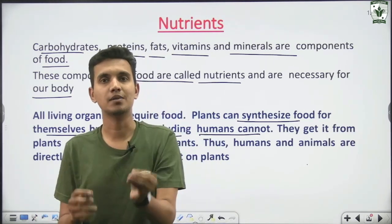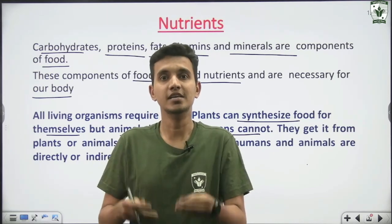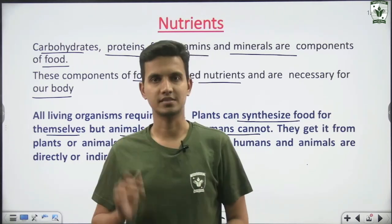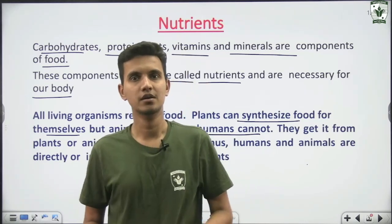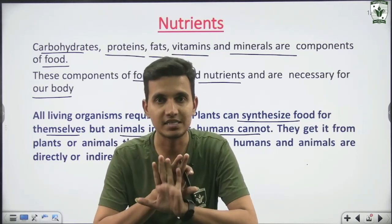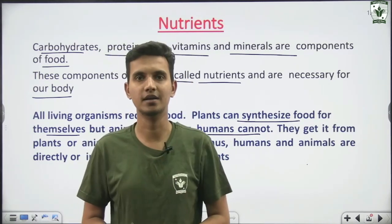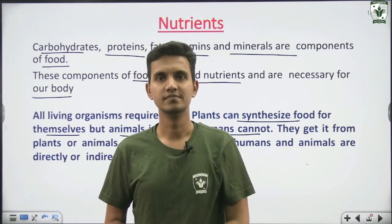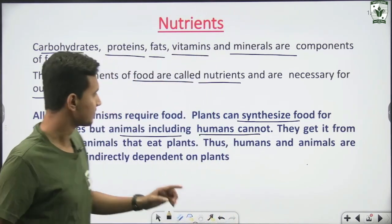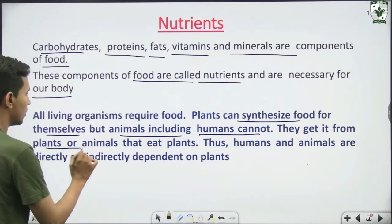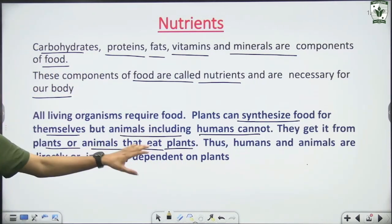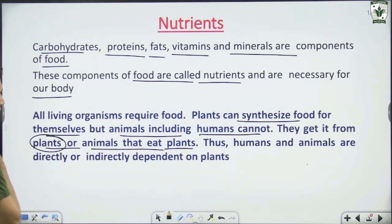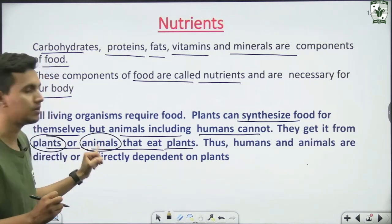Our body does not have the capacity to create glucose, carbohydrates, or protein on its own. We need to take carbohydrates and proteins from outside our body. If there were a special process in our body to create these, we wouldn't need to eat them. So we get nutrients from plants and animals that eat plants — humans and animals are not capable of making their own food and take it from plants or animals.